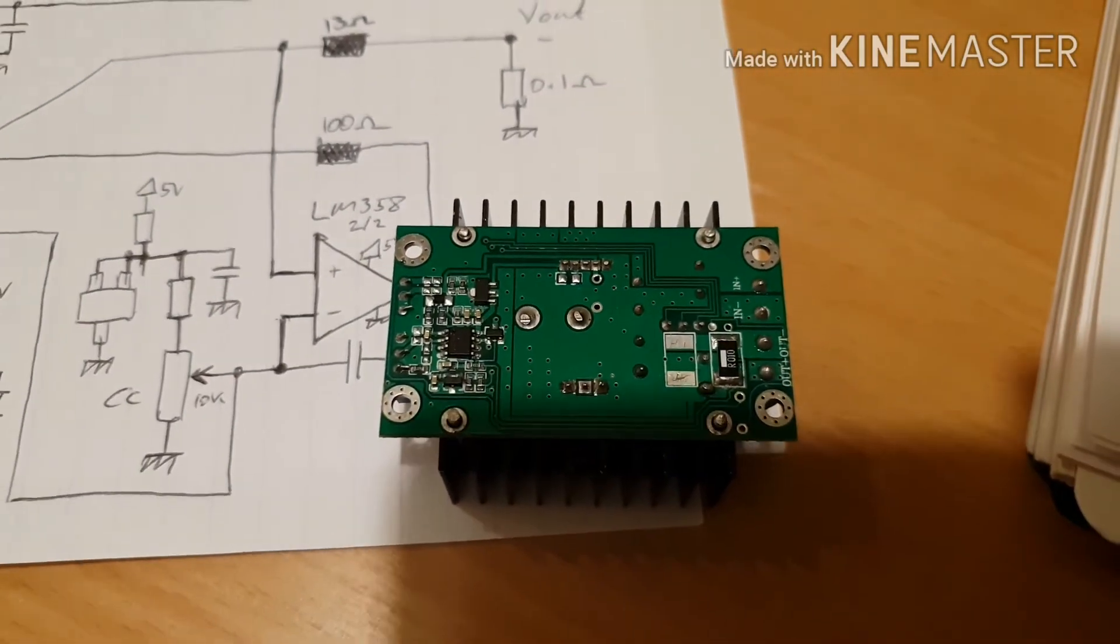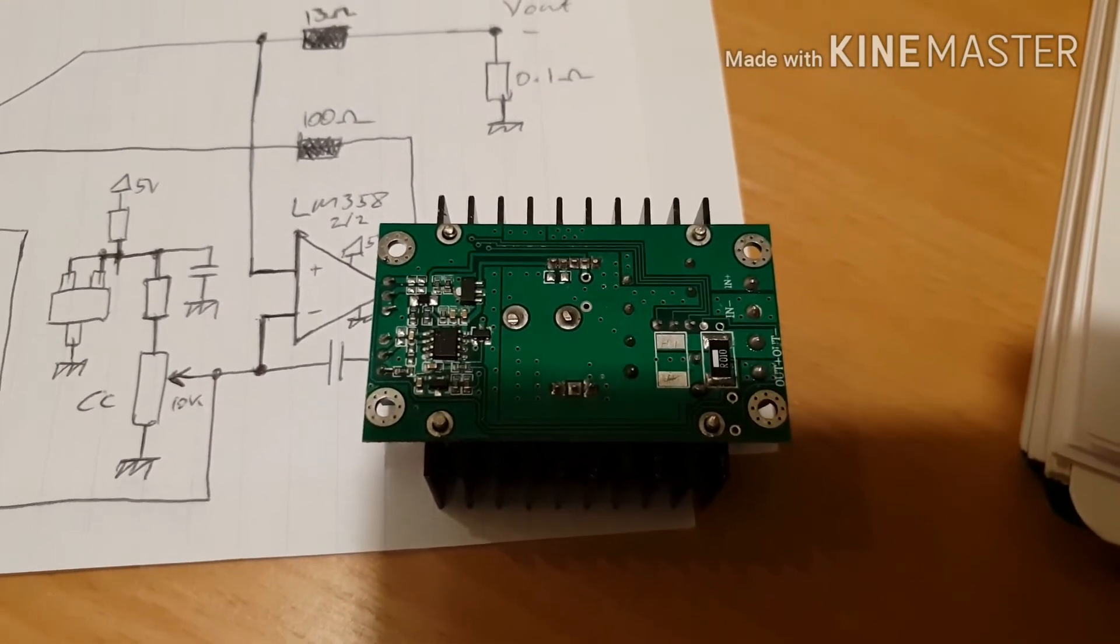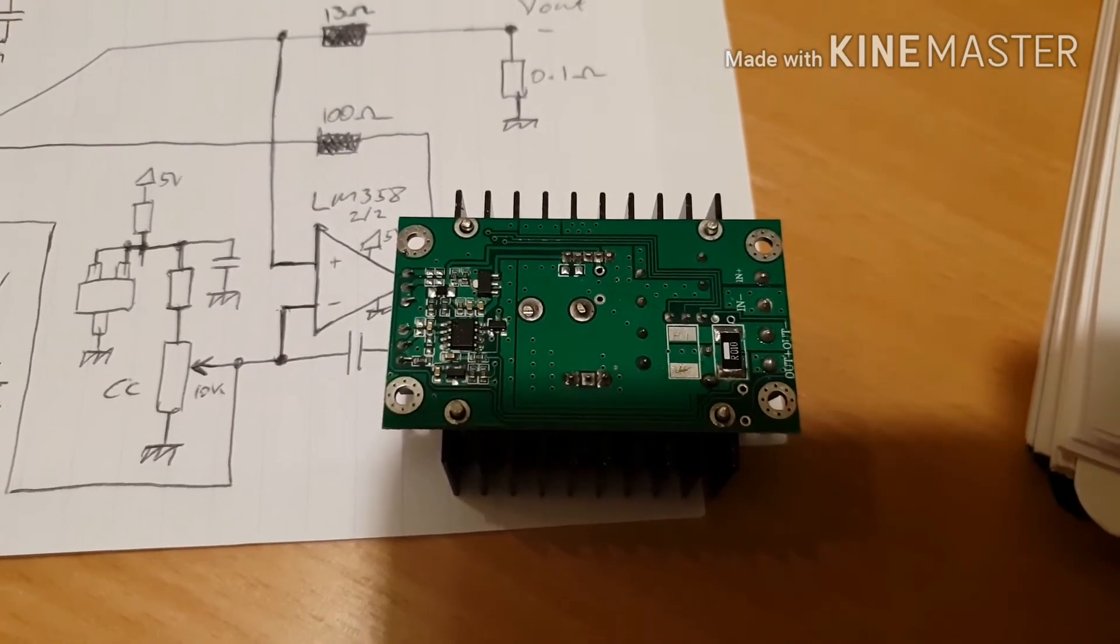So I'm going to add that cap as well. Hopefully with those two little mods, this thing should become a working constant current power supply, and then we can use it to power the Peltier.